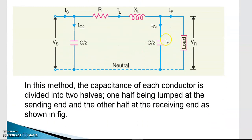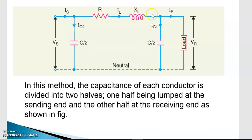In the nominal pi model, R and L are lumped at the center, and the capacitance is split: half is considered near the sending end and half near the load side. This model looks like the Greek letter pi, with the two shunt capacitances forming the legs. This is the nominal pi model for medium transmission lines.